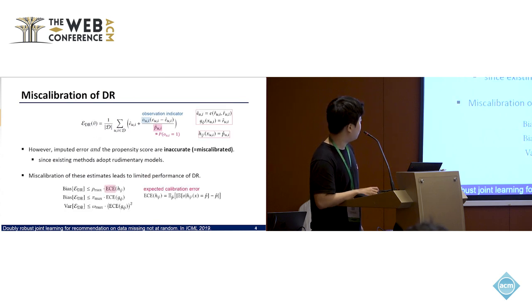So in my paper, we claim that imputed error and the propensity score are inaccurate, which means that they are miscalibrated.